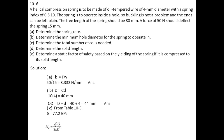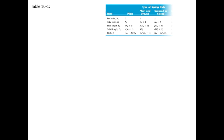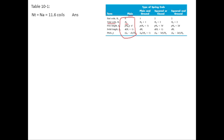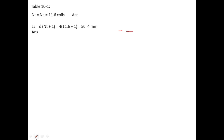Total number of coils N_T is found from N_A using table 10.1. Since the spring is plain-ground, N_T equals N_A, so N_T equals 11.6 coils. Solid length L_S is also found from the same table: L_S = d(N_T + 1). With d = 4 mm and N_T = 11.6, we get L_S = 4 × 12.6 = 50.4 mm.